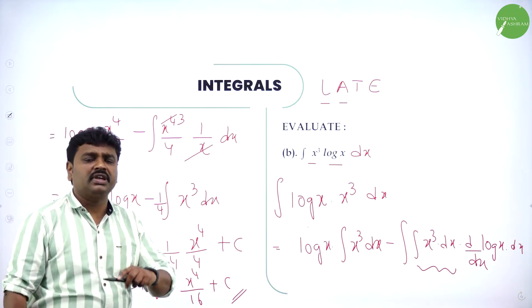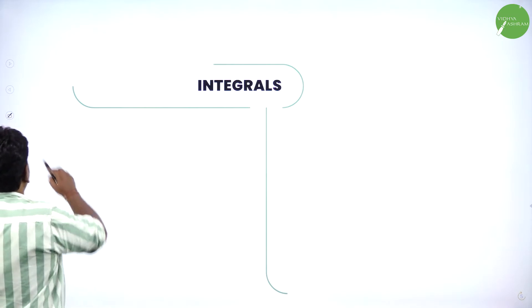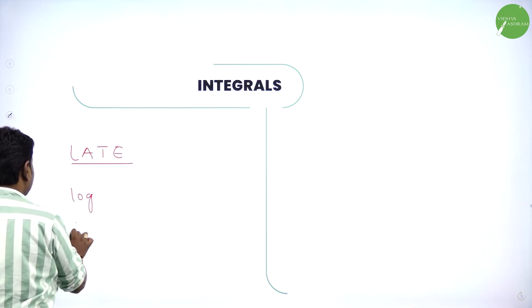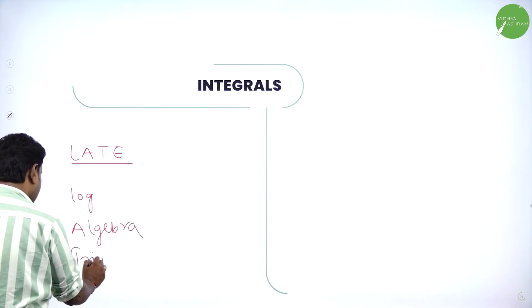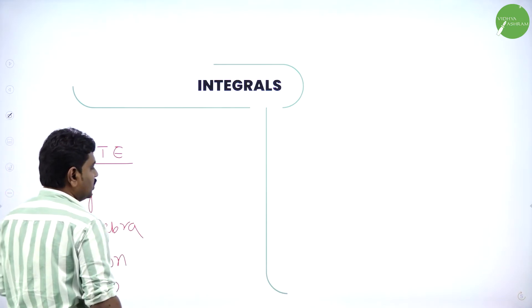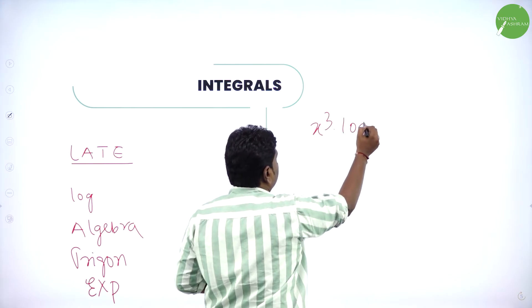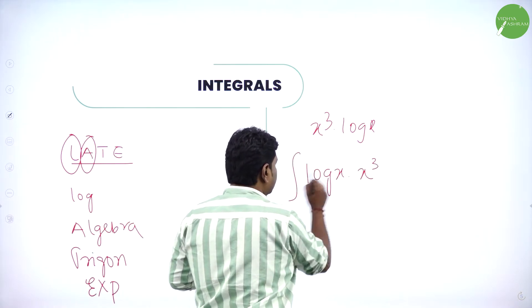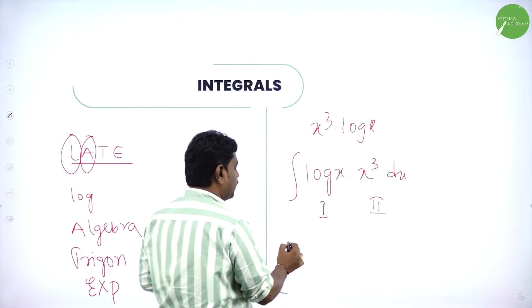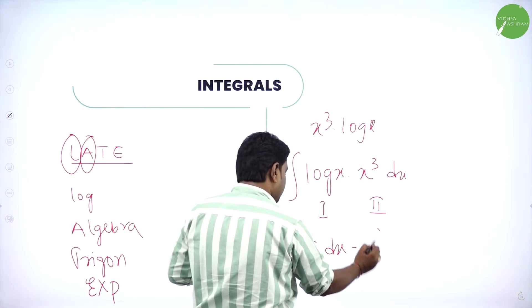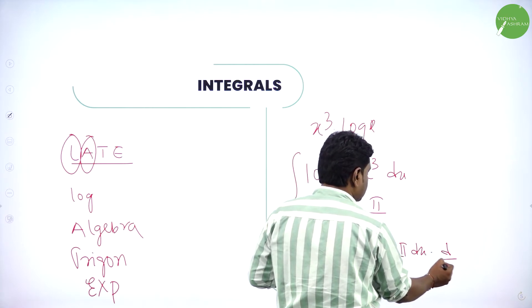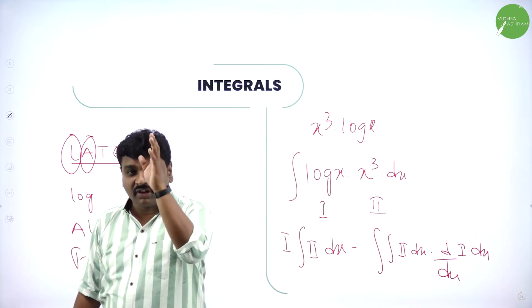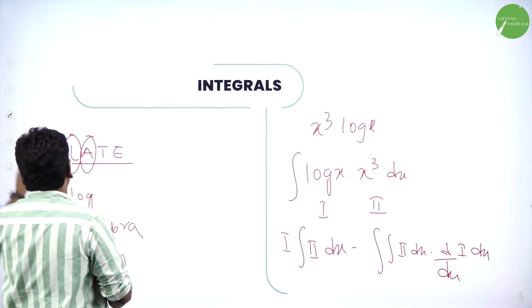Integration of x^n is x^(n+1)/(n+1). In that problem, LATE code: L is logarithm, A is algebra, T is trigonometry (like sin, cos), E is exponential (like e^x). For x³·log(x), L comes first so log(x) is first function, x³ is second. We applied parts: first into integral of second minus integral of integral of second into derivative of first. Memorize the integration by parts formula first.